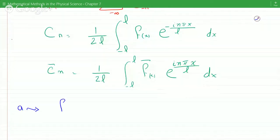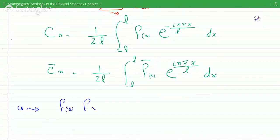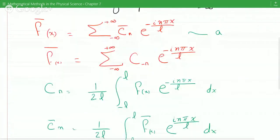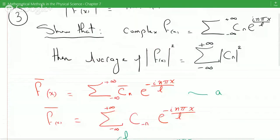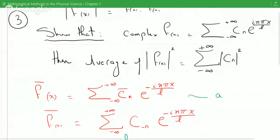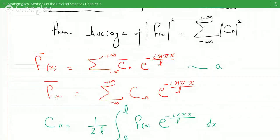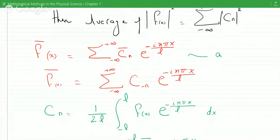This will give us F of x times the complex conjugate of F of x. This has to equal, we can bring F of x inside.